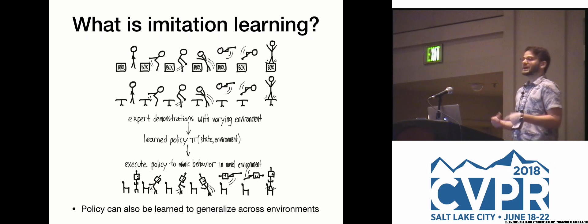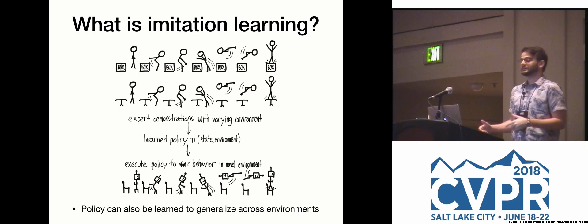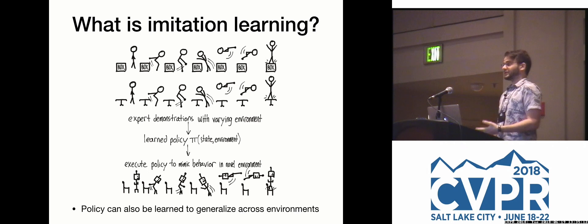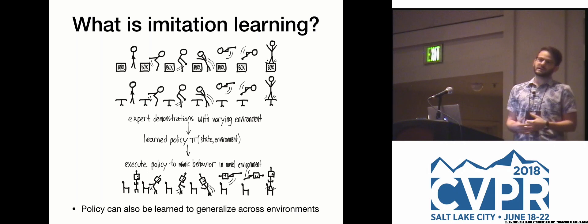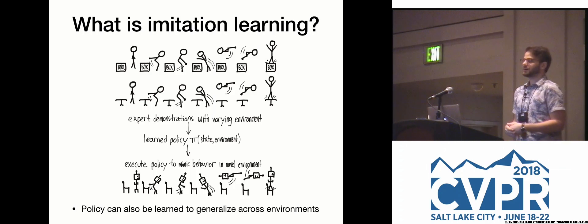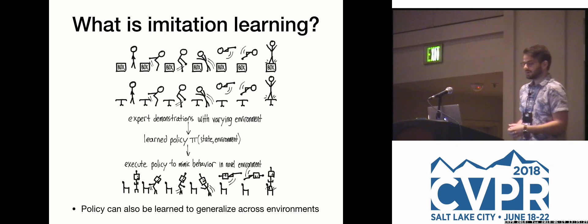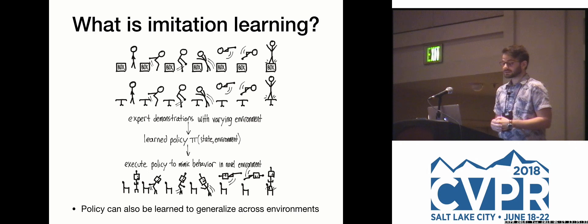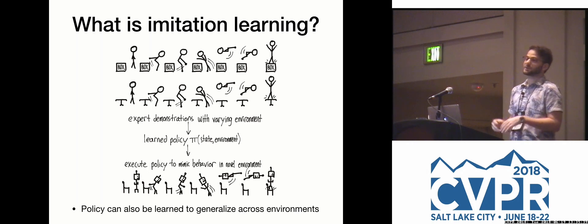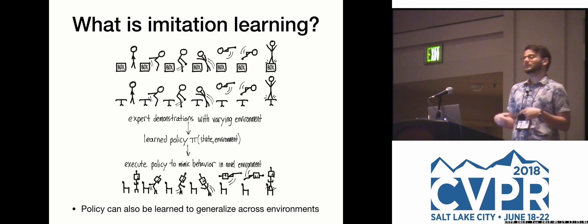One challenge of imitation learning is that it requires generalizing across various environments and dealing with noisy demonstrations. For instance, a human demonstrating a backflip onto a box or a table involves different types of behavior. One of the goals of IRL is to build a policy that generalizes to new situations — for example, a robot able to do a backflip onto a chair it has never seen before, having seen a human do a backflip onto other types of surfaces.